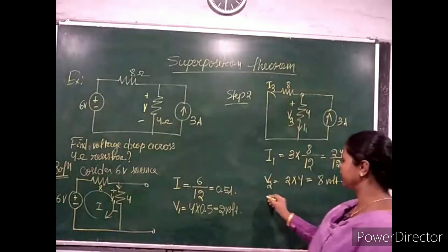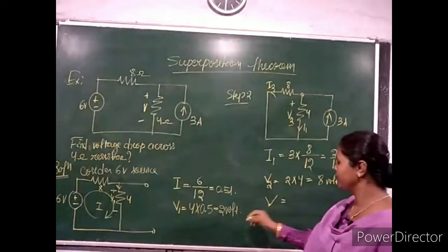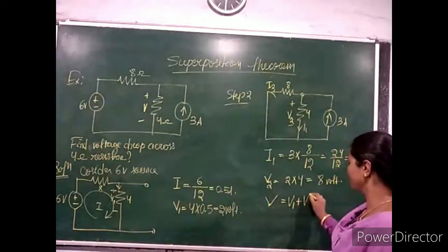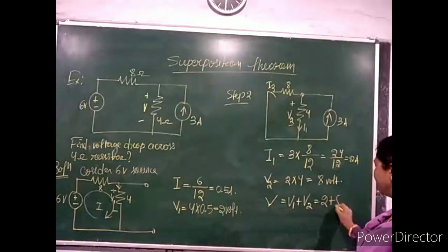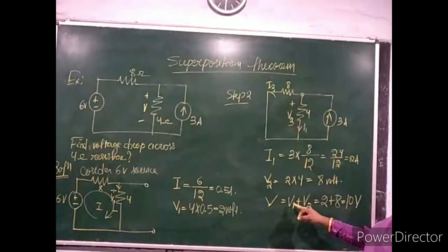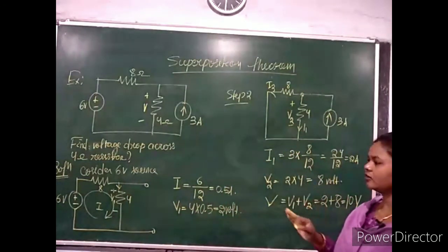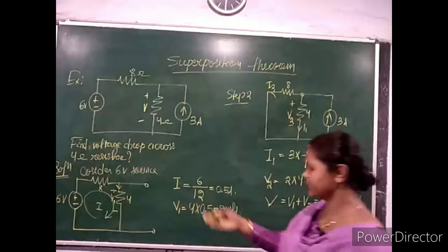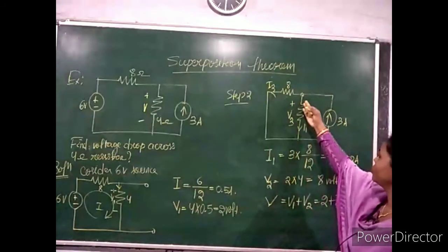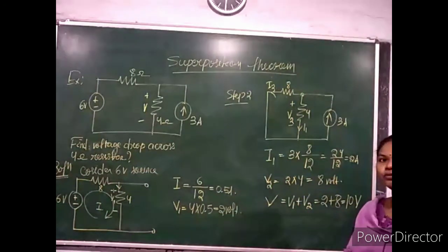The total voltage drop across the 4-ohm resistor is V1 + V2. Since V1 and V2 have the same polarity — meaning the currents in both steps flow in the same direction — we add them: V1 = 2 volts plus V2 = 8 volts gives a total of 10 volts.